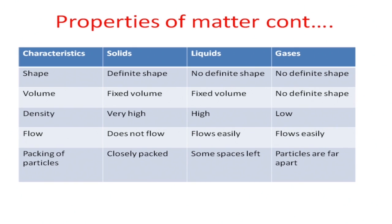The first characteristic that is common across the three states of matter is shape. Solids have definite shape. What makes solids have definite shape? It is because the particles of solids are closely packed together, and therefore the force of attraction between the particles is so strong that it gives these particles a definite shape. Solids can be regular — triangular solids, rectangular solids, etc. Those are definite shapes that we can define.